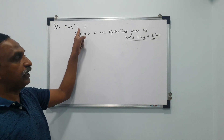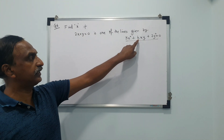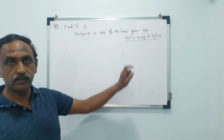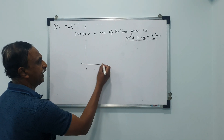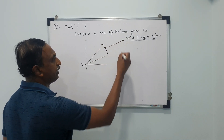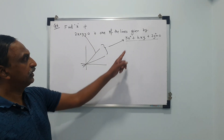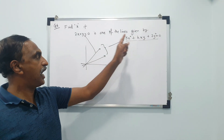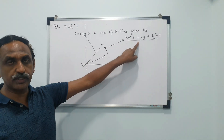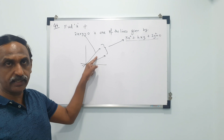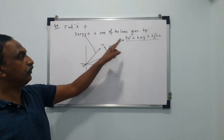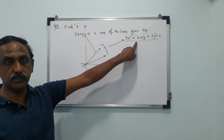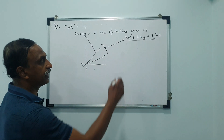We are going to find the value of k. We know that this equation represents two lines, and one of the lines is 2x + y = 0. What should be the value of k? We have two lines whose combined equation is given. One line has this equation — then what is the value of k? We will derive the auxiliary equation and use the slope of this known line.